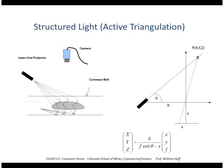A structured light system consists of a standard camera and some sort of projector, such as a laser line projector. The laser is oriented and positioned at a known pose with respect to the camera. It shines light on the scene, which is detected by the camera, and using the process of triangulation the camera can determine the distance to that point.